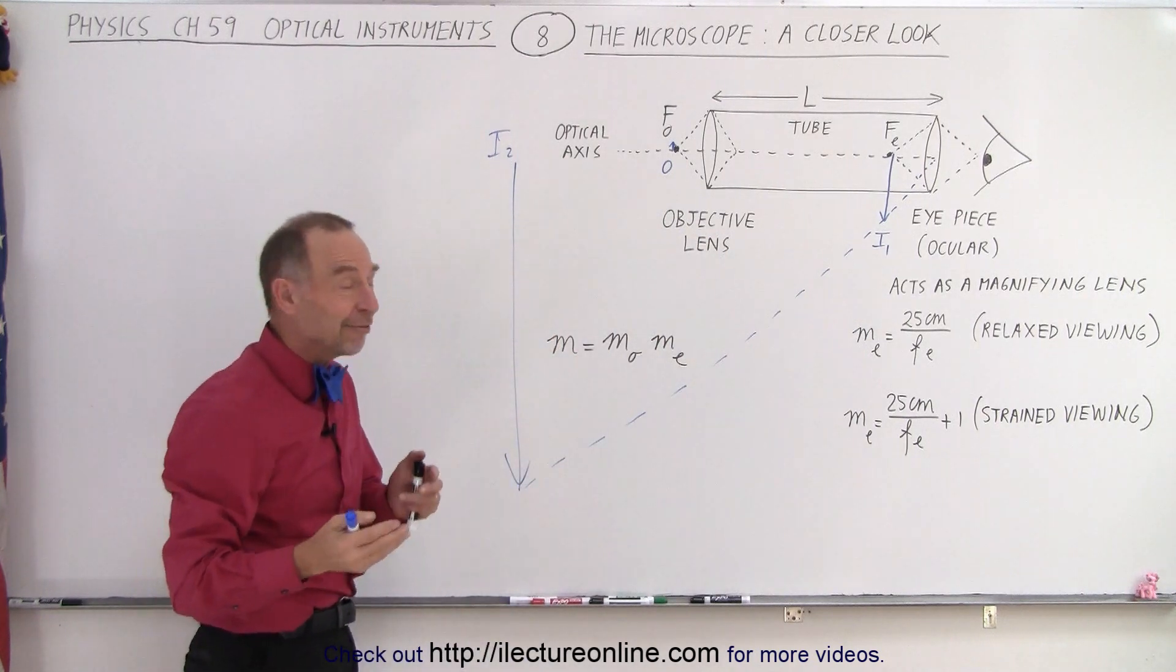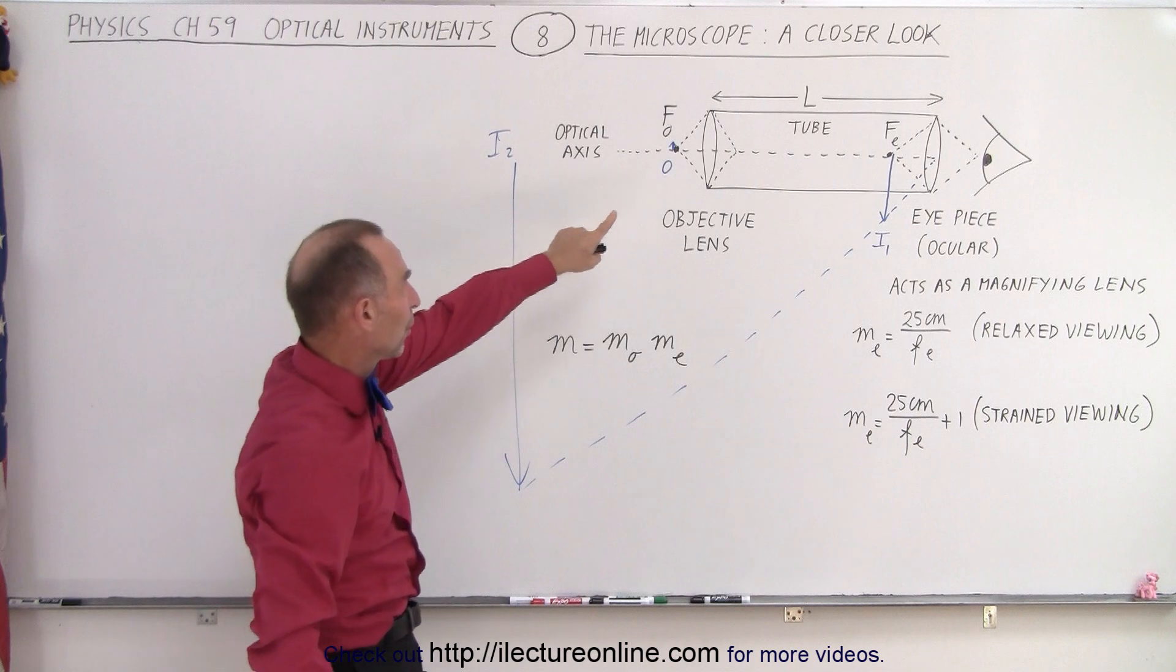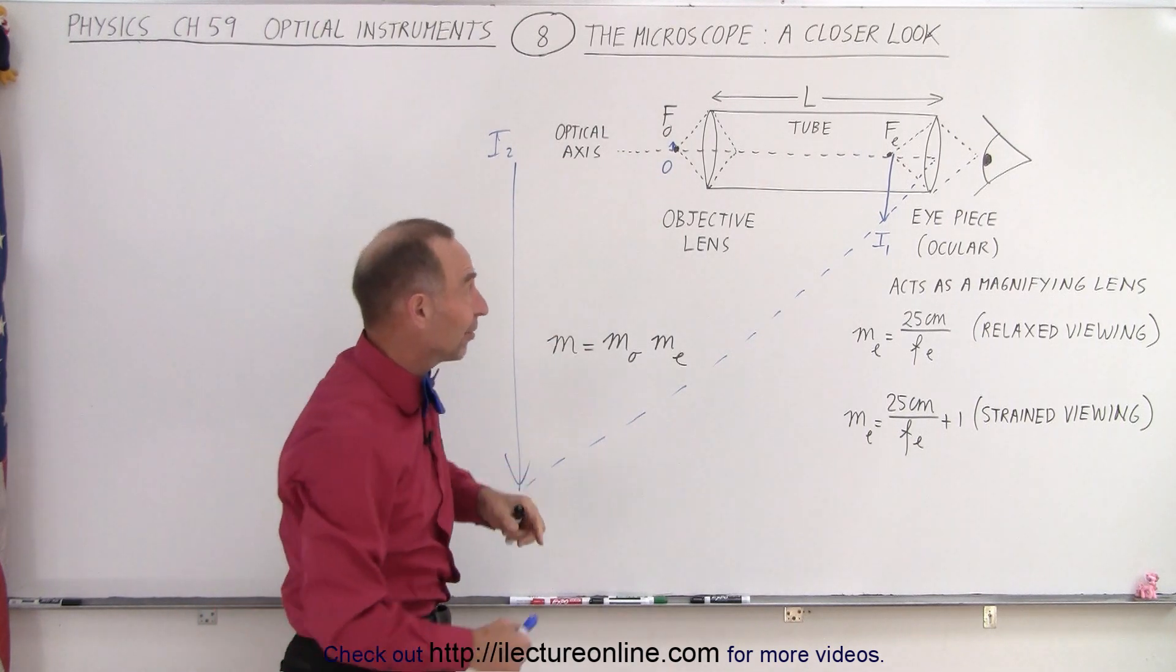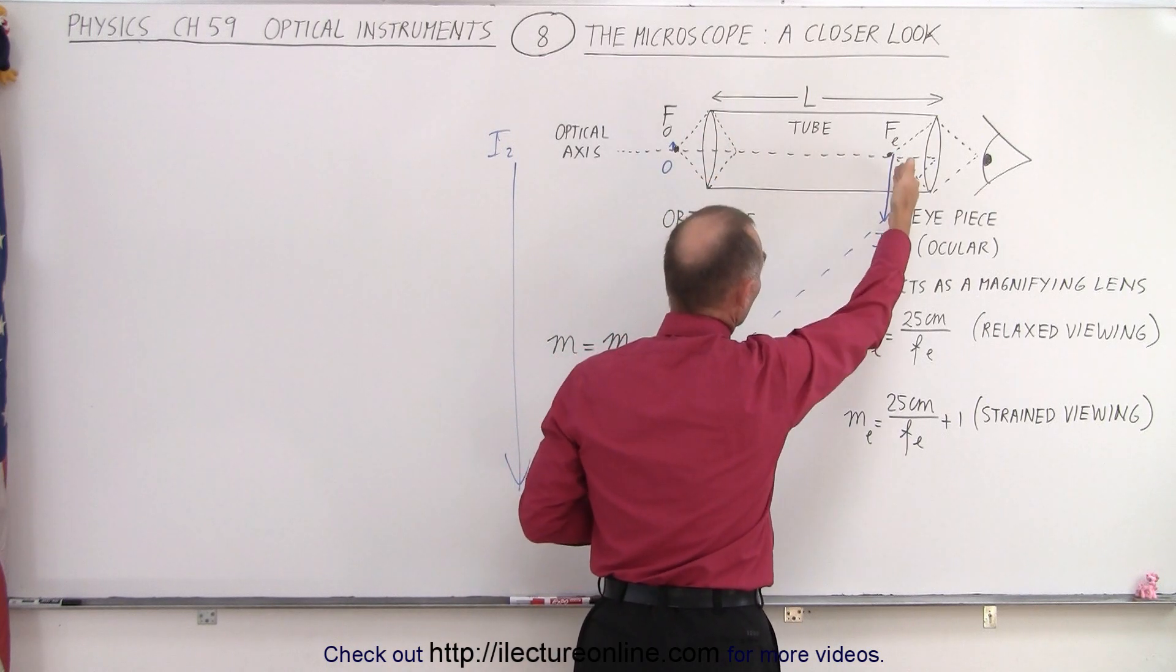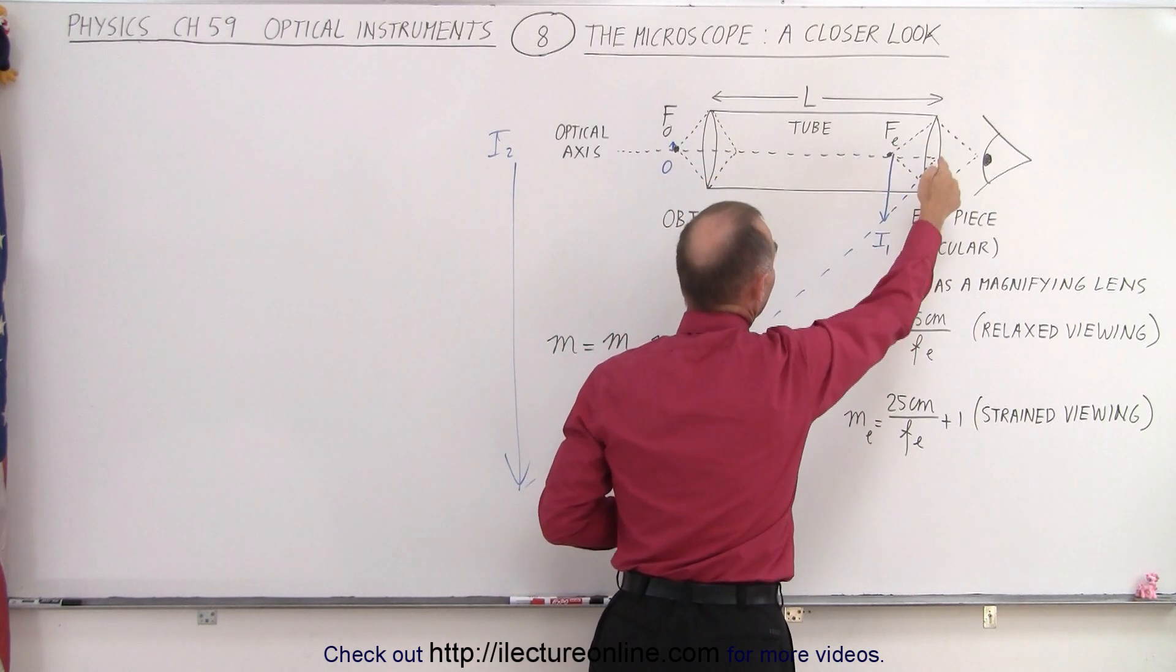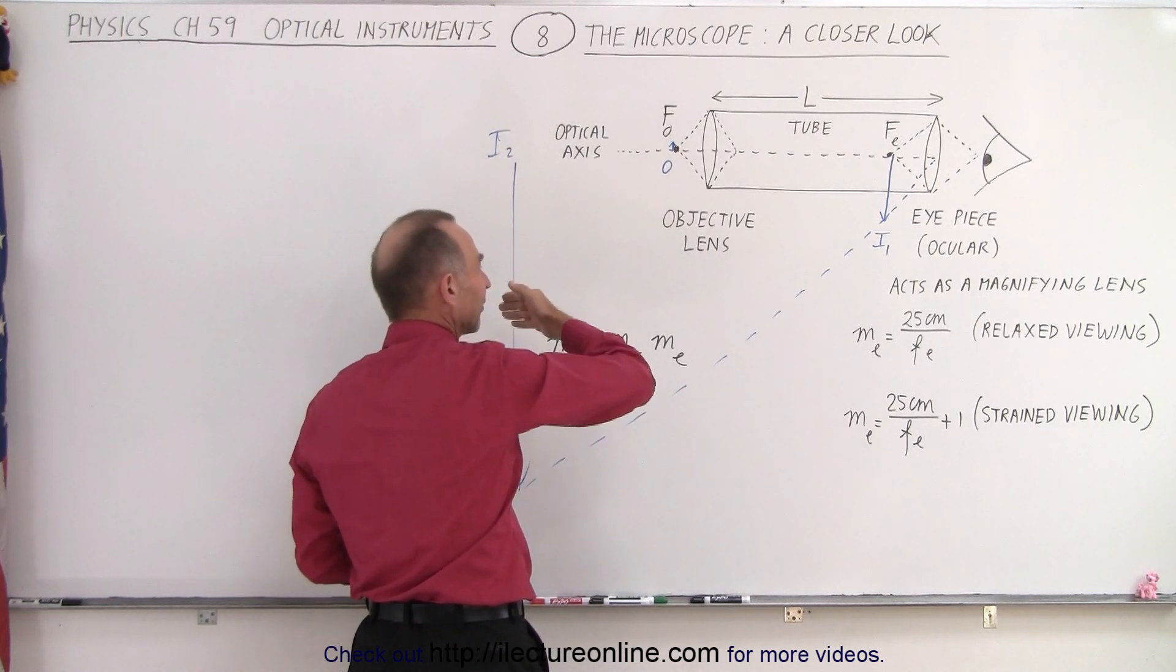And notice that image two will be magnified again relative to image one. Now notice that the final image, which is image two, is going to be upside down relative to the original object because it's the first lens objective that causes the image to flip over. We have a real image right here, but it's inverted. And then the magnifying glass makes it larger again, magnifies it again.